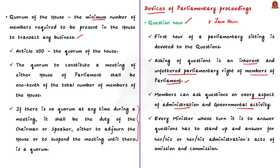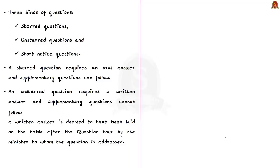During the question hour, every minister whose turn is to answer questions has to stand up and answer for acts of omission and commission. It is through questions in parliament that the government remains in touch with the people, as members can ventilate the grievances of the public in matters concerning administration. The question hour is dealt with by the rules of procedures of both houses of parliament, and therefore it is a formal device.